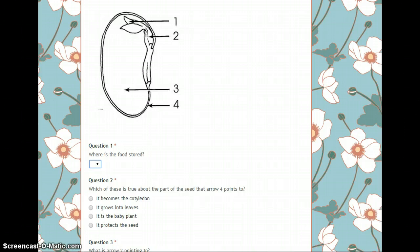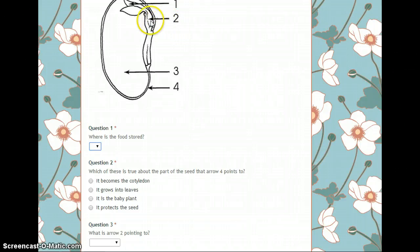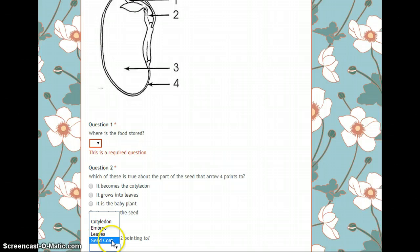And question number 3: What is arrow 2 pointing to? This right in here. Is that the cotyledon, embryo, leaves, or seed coat? Choose your best choice.